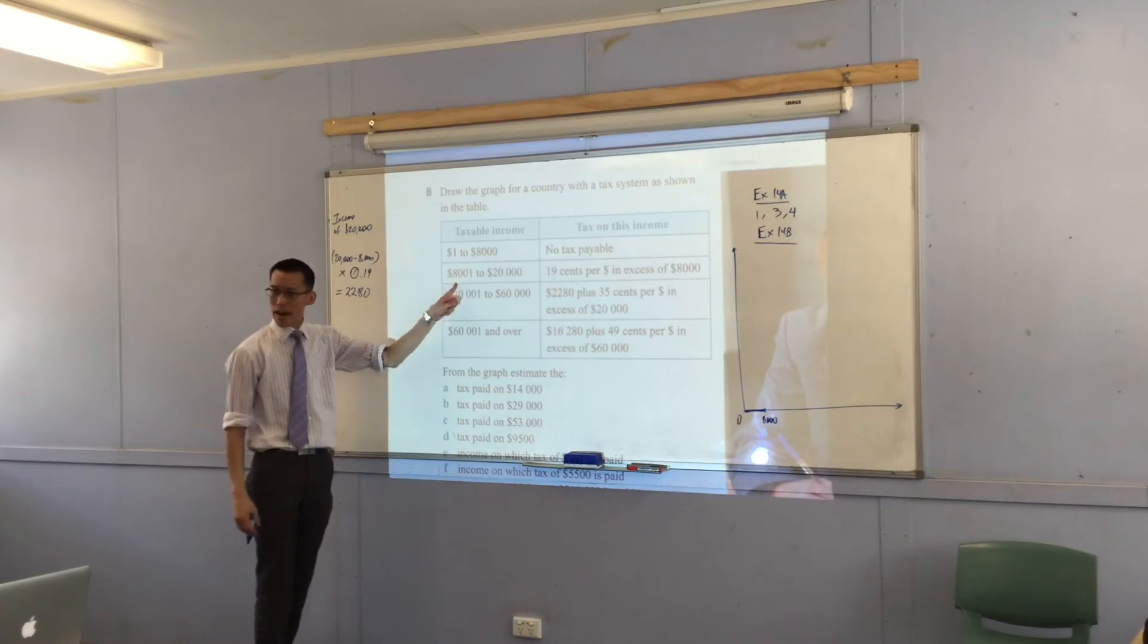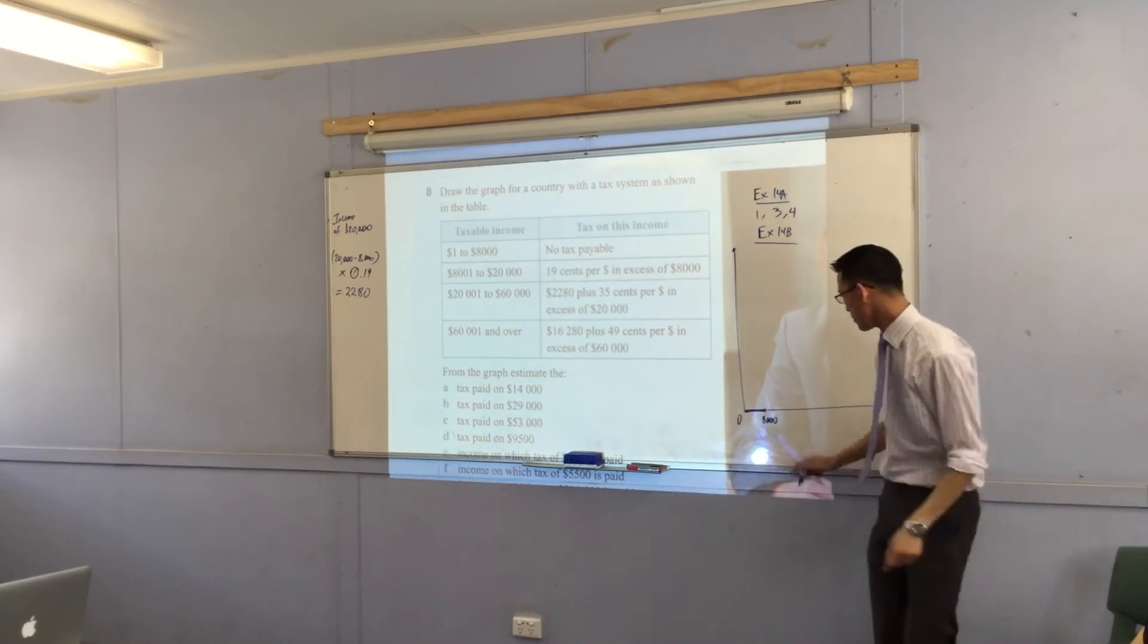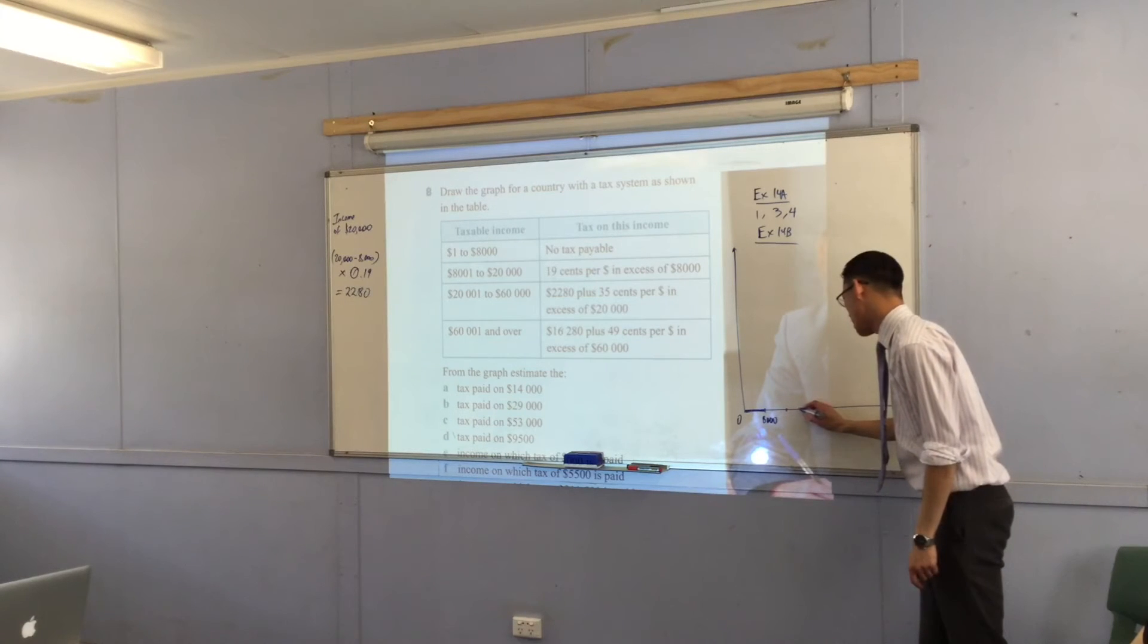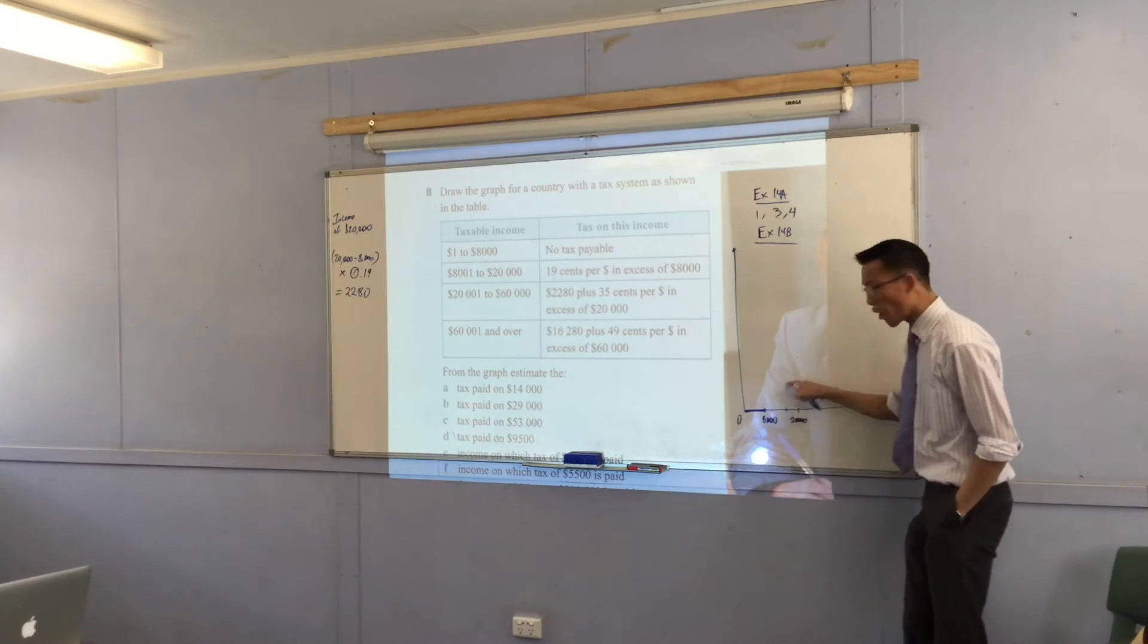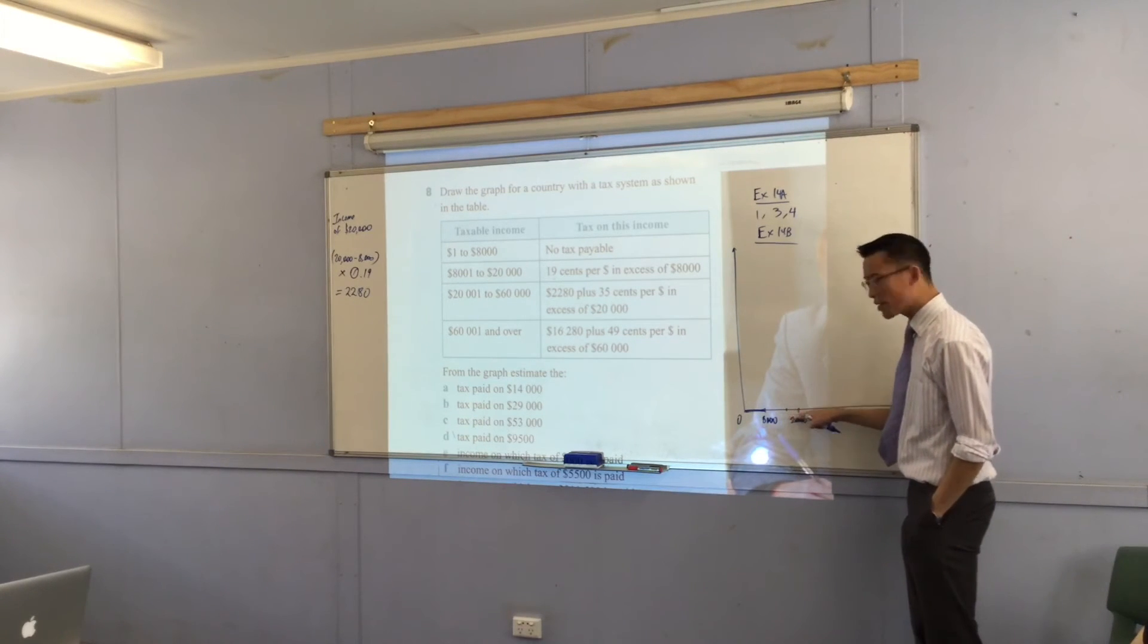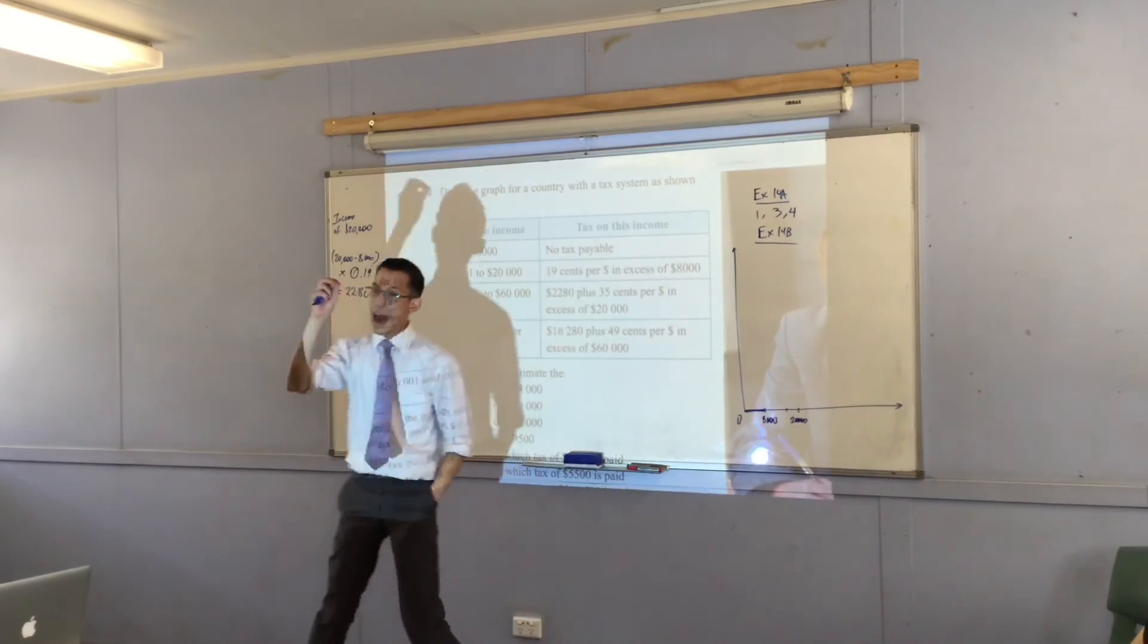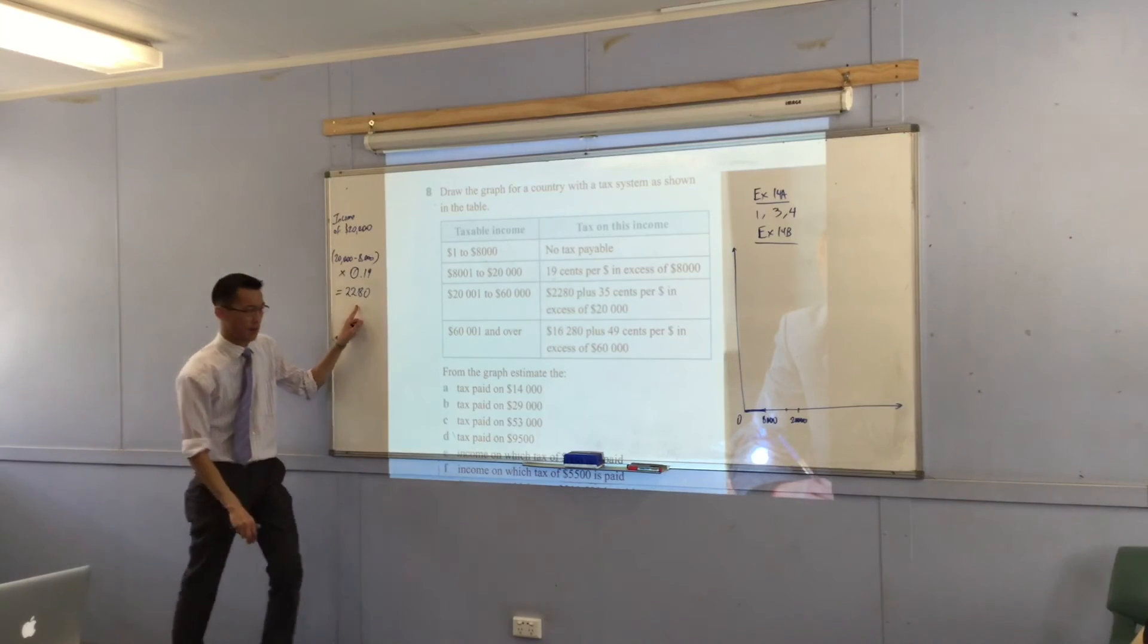But now here, from $8,001 to $20,000. So I'm going to go up here. $8,000, I guess that would make that $16,000. So $20,000 would be something like that. Okay. This is going to go up. It's going to go up. What's it going to go up to? Well, you've already worked this out, haven't you? At $20,000, this is how much you're going to pay. Exactly that amount. Okay.